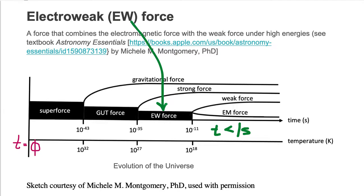The electroweak force combines the weak force with the electromagnetic force, and it exists at a time when the universe was less than one second old. It exists at a time where the temperatures were extremely high.